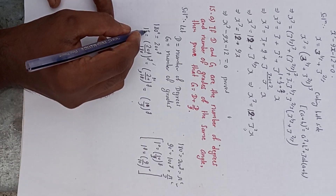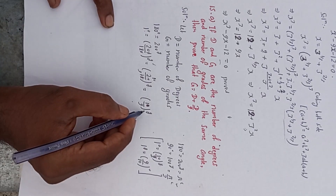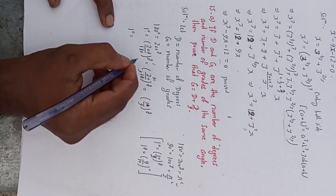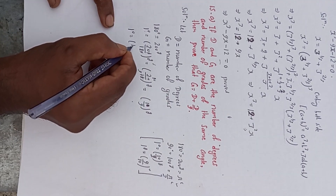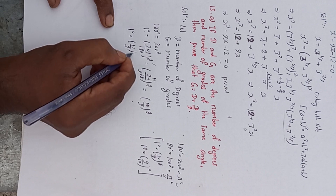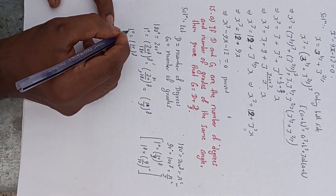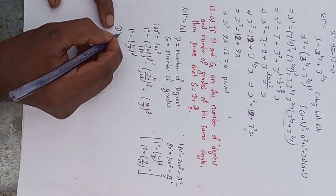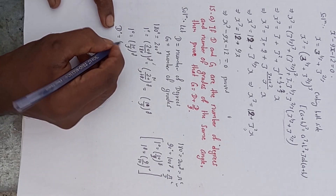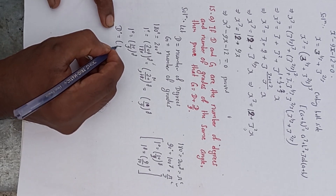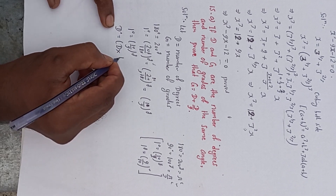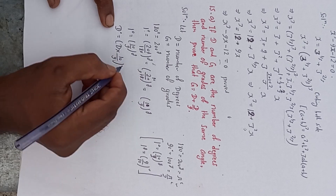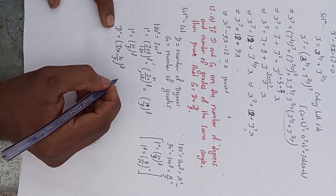From here we know that 1 degree is equal to 10 by 9 grade. So in a single line: 1 degree is equal to 10 by 9 grade. In place of this 1 degree, if I put d degrees, then what will be here? d multiplied by 10 by 9, and this g as it is.